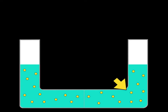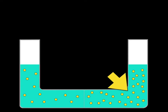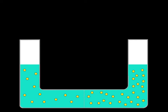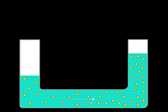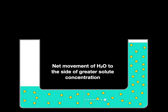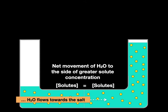So let's take this side and increase the solute concentration from here to here, and now we watch what happens. Water flows towards the saltier side and there's net movement of water to the side of greater solute concentration, until the solute concentration on one side of the membrane equals the solute concentration on the other side — basically the concentrations are the same on both sides. Water is flowing towards the saltier side.